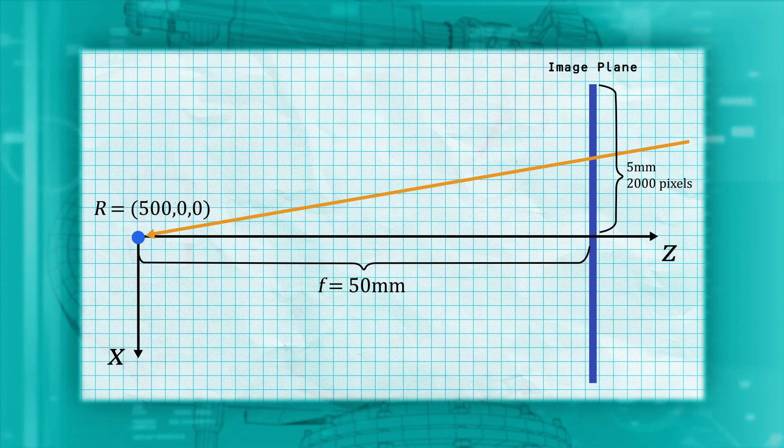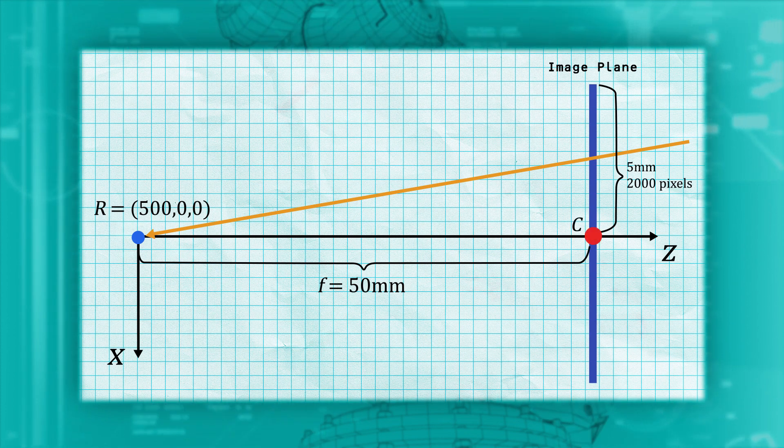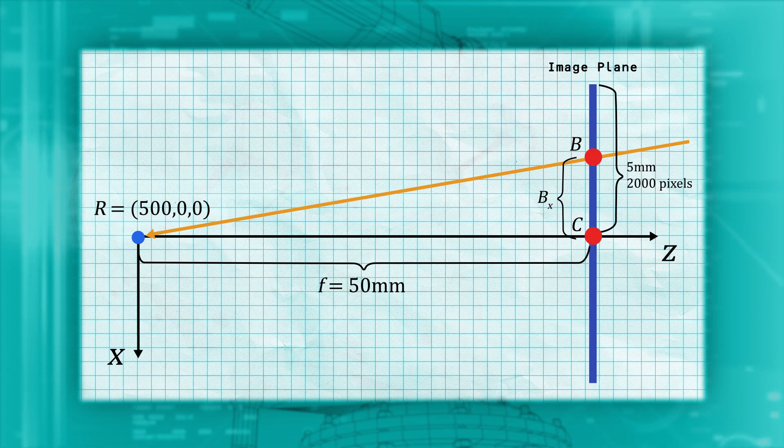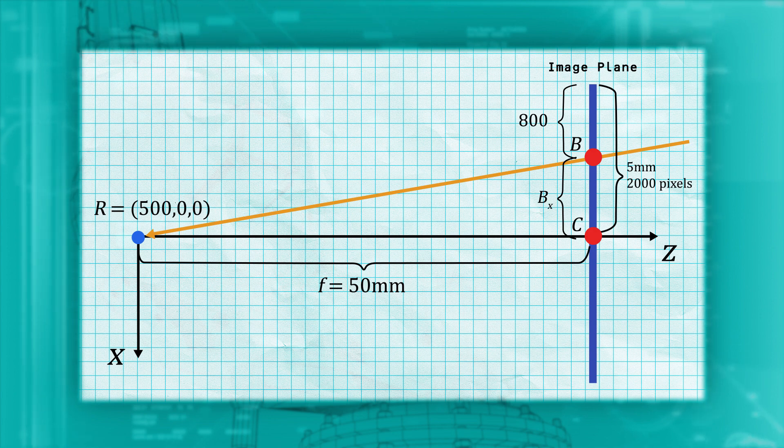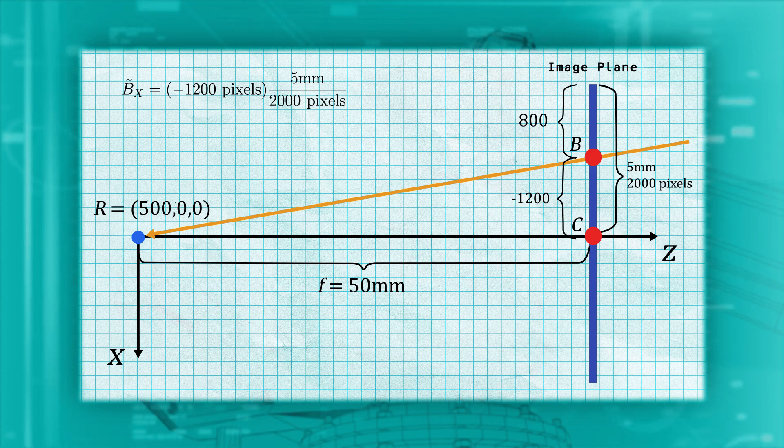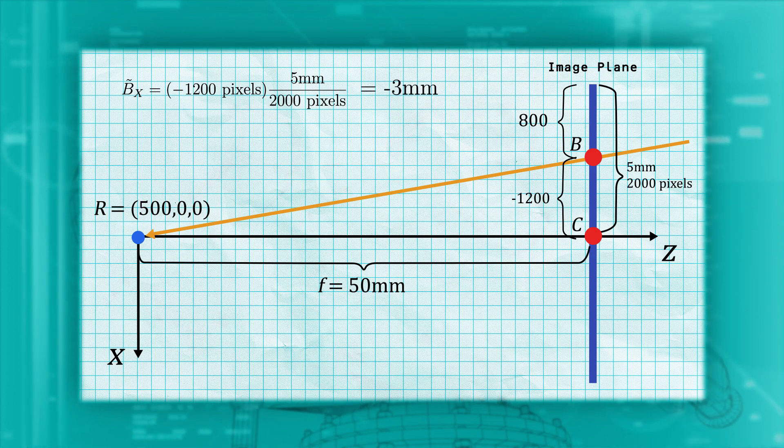Just as for the left camera, we will start with finding the distance from the sensor center to point B. In this case, the feature is centered at an X coordinate of 800 pixels, or 1200 pixels to the left of center. Multiplying negative 1200 by our ratio of 5 millimeters per 2000 pixels, we get an X position of negative 3 millimeters.